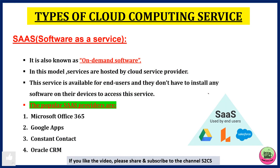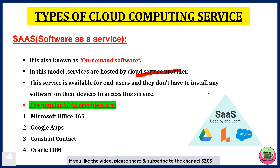We will understand each service in detail one by one. First is SaaS, that is software as a service. It is known as on-demand software. In this model, services are hosted by a cloud service provider — similar to how internet is provided by an internet service provider. This is for end users, so they don't need to install any software on their devices to access this service.